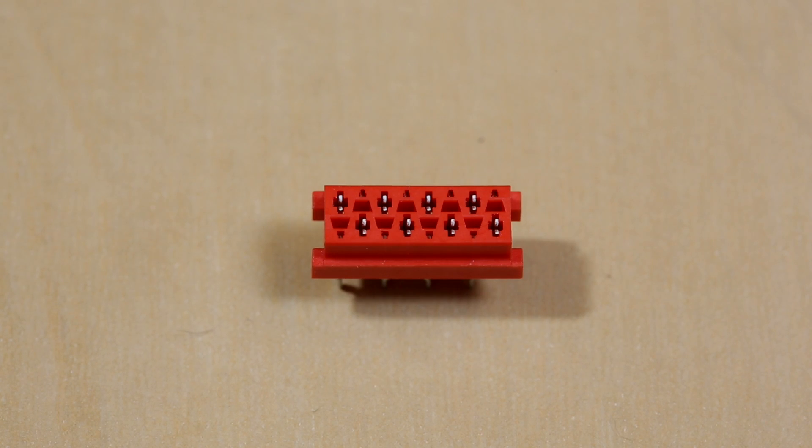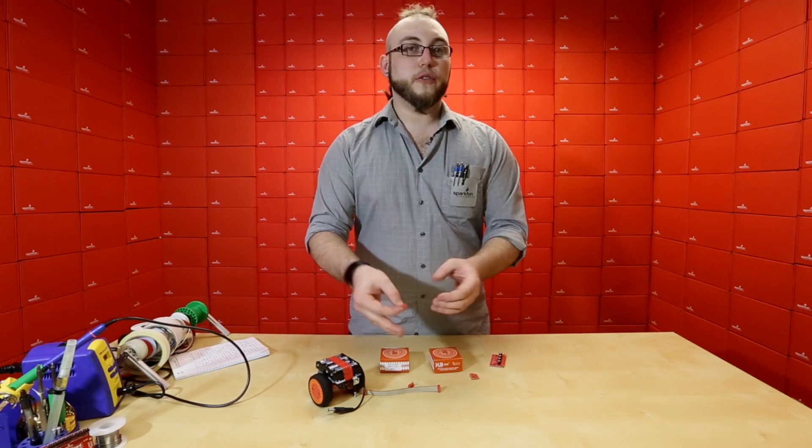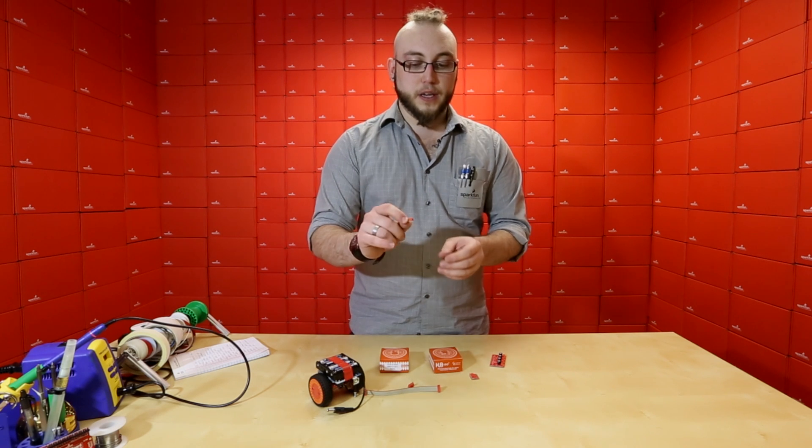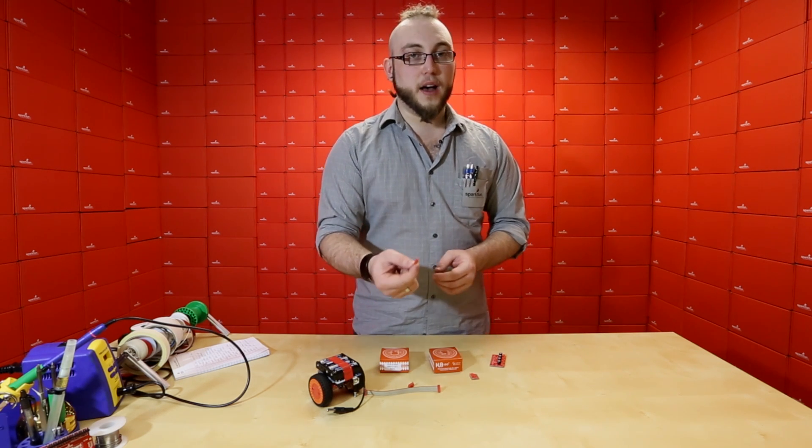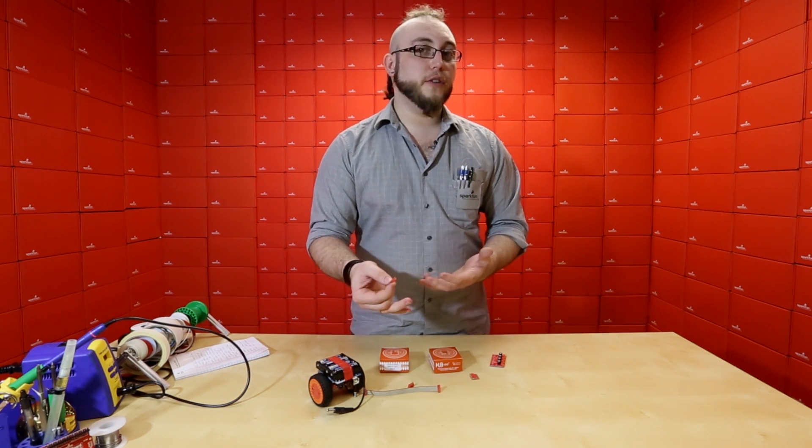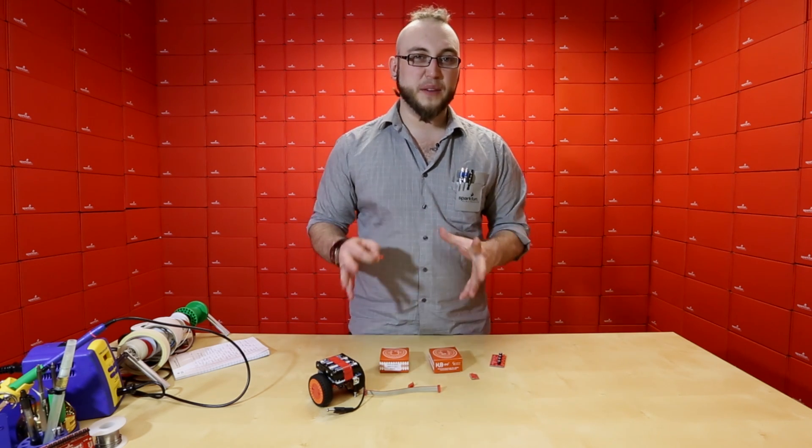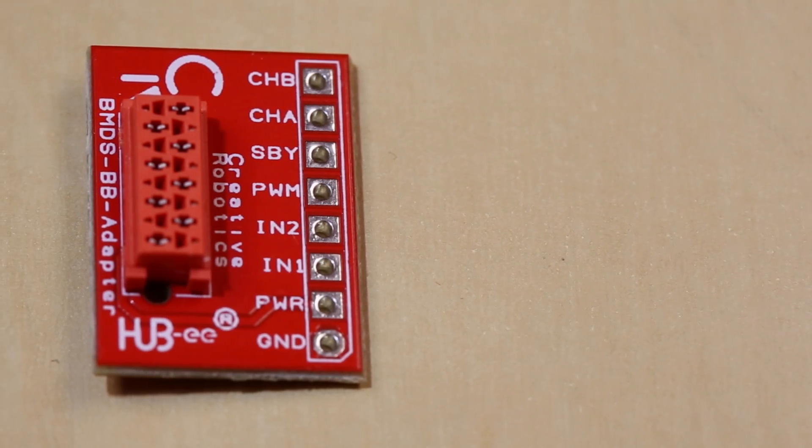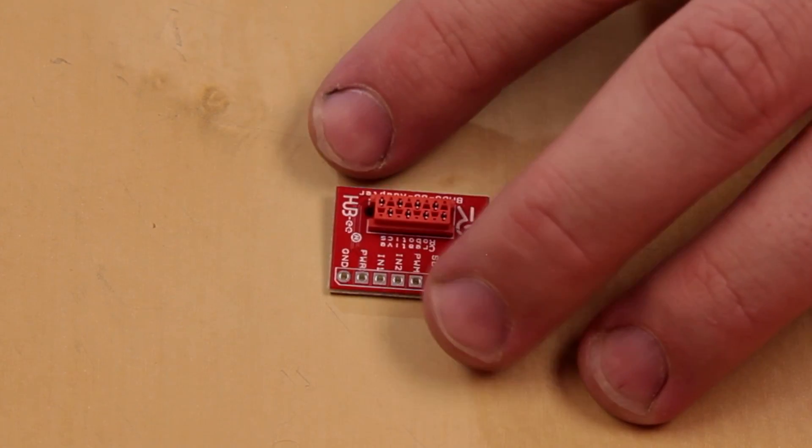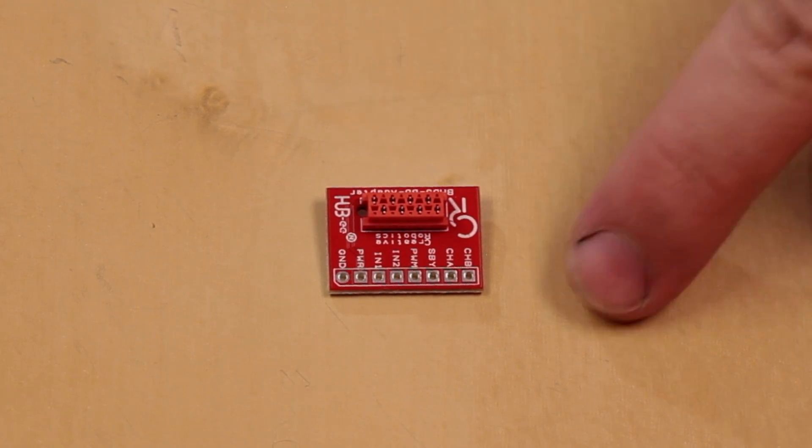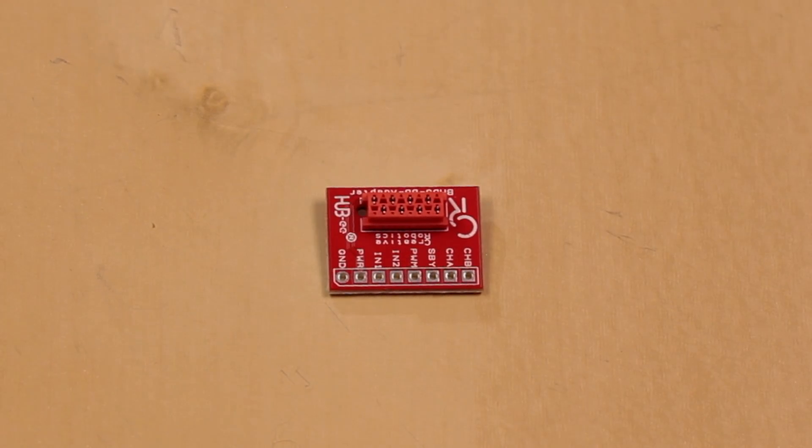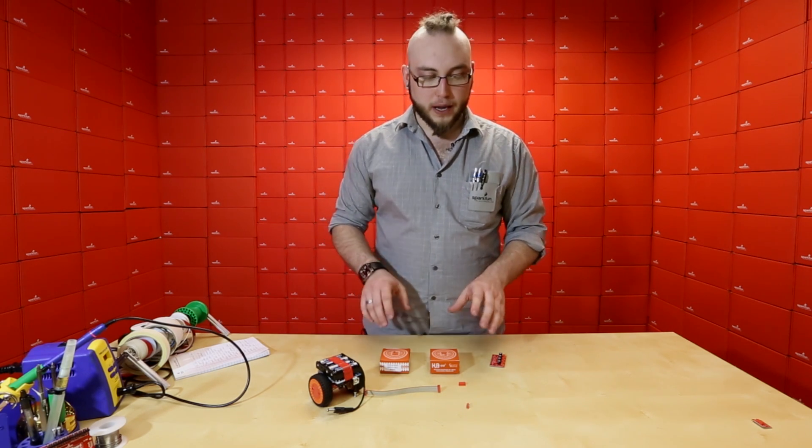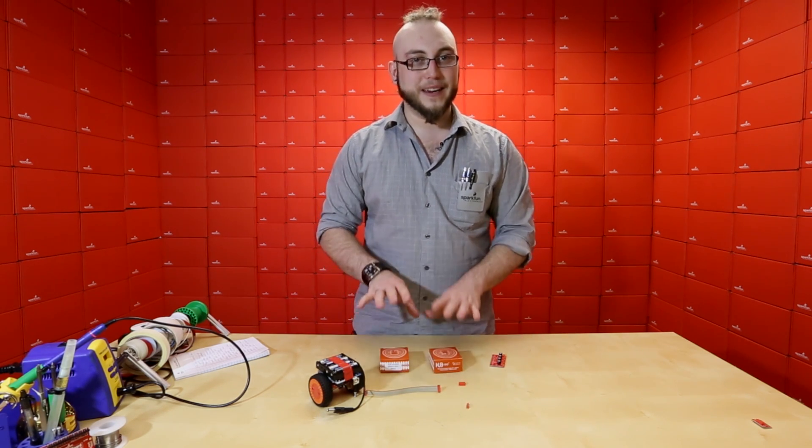We also carry the connectors themselves, the female side of the connector. So if you're designing your own board based around the Hubby wheels, you can actually include these in your design and then solder them directly to your board and then hook it up with ribbon cables and keep everything nice and clean. We do have a breakout board for the connector that these ribbon cables will mate to. The breakout board is really simple. It's just the connector and it breaks out to a single row of 0.1 inch spaced headers. So you can put some pin headers on that, plug it into a breadboard and breadboard using your Hubby wheels very easily.